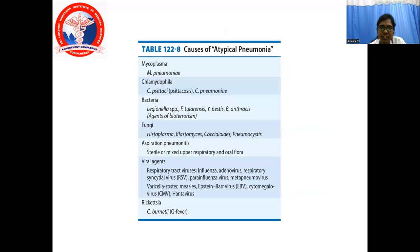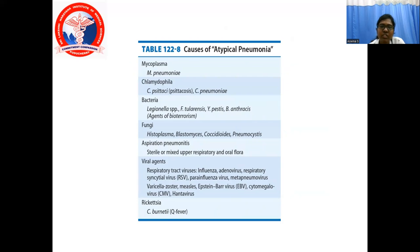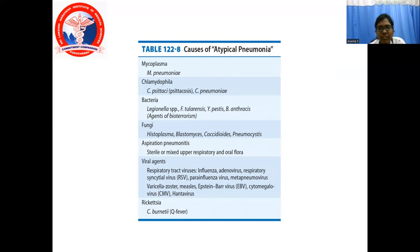Causes of atypical pneumonia include: under Mycoplasma — Mycoplasma pneumoniae; under Chlamydophila — Chlamydophila psittaci and Chlamydophila pneumoniae. Under bacteria: Legionella, Francisella tularensis, Yersinia pestis, Bacillus anthracis — agents of bioterrorism. Fungi include Histoplasma, Blastomyces, and Histoplasma capsulatum. Aspiration pneumonitis — sterile or mixed upper respiratory and oral flora. Viral agents include respiratory tract viruses: influenza, adenovirus, respiratory syncytial virus, para-influenza virus, metapneumovirus, varicella zoster, measles, Epstein-Barr virus, cytomegalovirus, and other viruses.